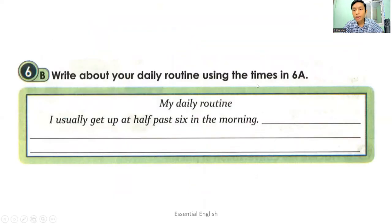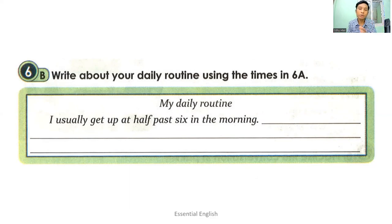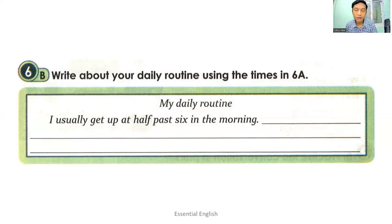Exercise 6B: Write about your daily routine using the times in 6A. In exercise 6A you have written your daily routine activities. Now please combine them into a paragraph. For example: I usually get up at half past six in the morning. I have breakfast at a quarter past seven. I leave for school at half past eight. I have lunch at noon. I go home at half past three. I play with my friends at about a quarter to four in the evening. Write your paragraph — this is for your writing skill.